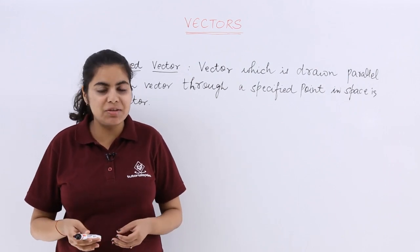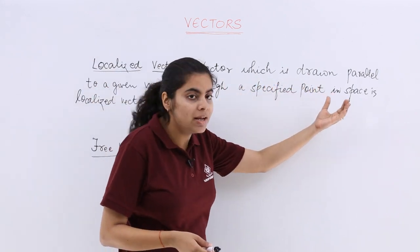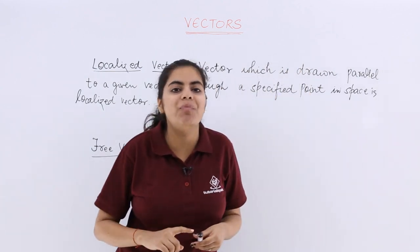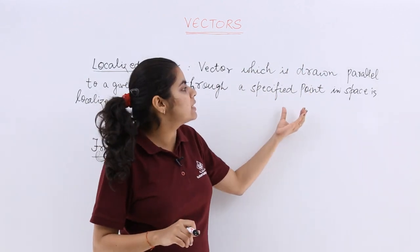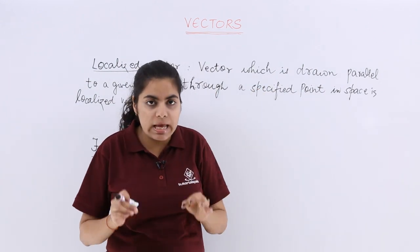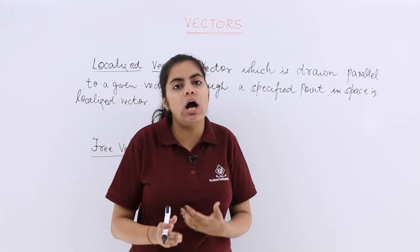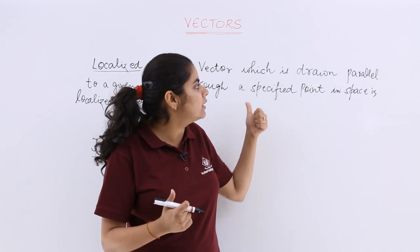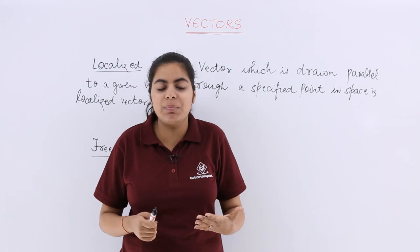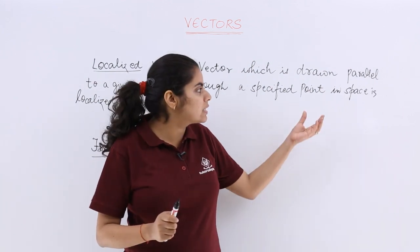We are going to talk about localized vectors and free vectors. A localized vector is a vector which is drawn parallel to a given vector through a specified point in space. So the manner in which the vector is drawn matters — it is drawn parallel to a given vector through a specified point, meaning direction is very important in the case of a localized vector.